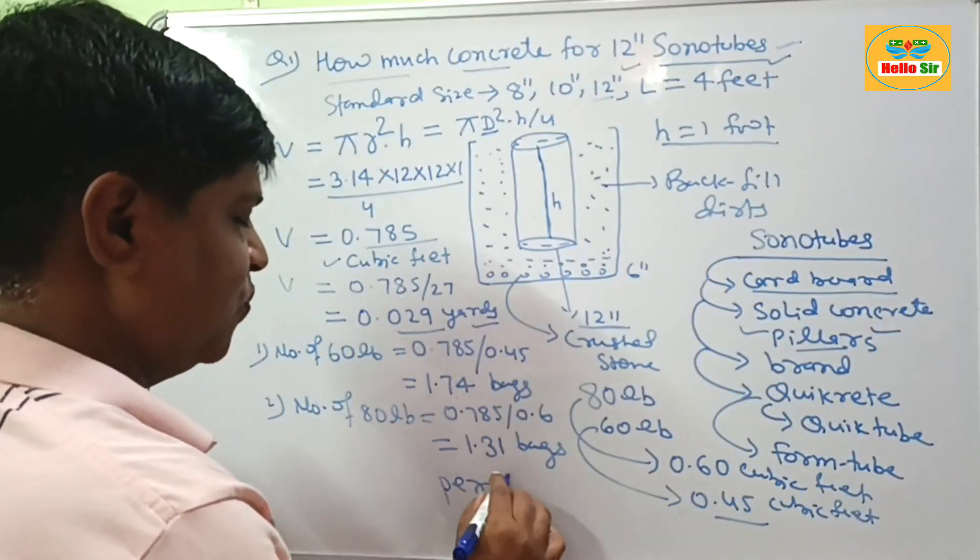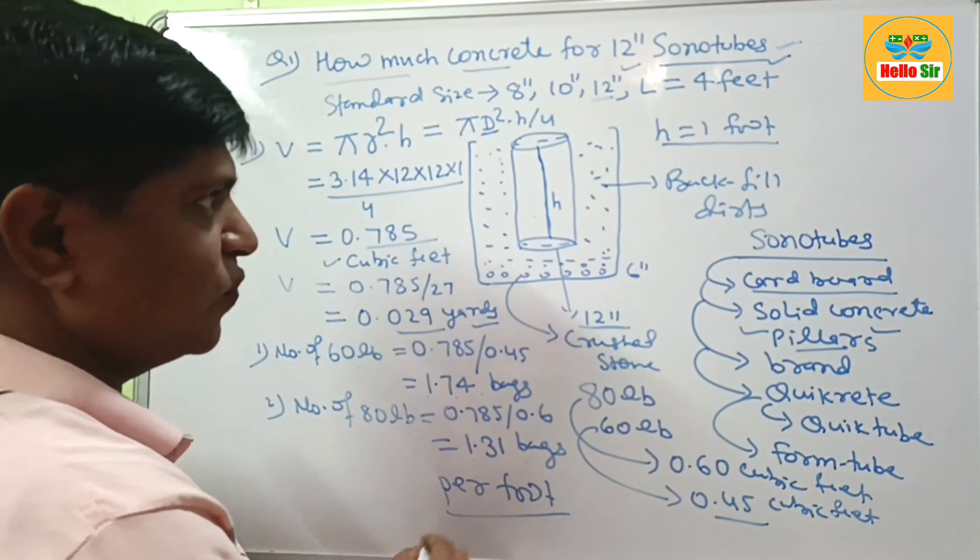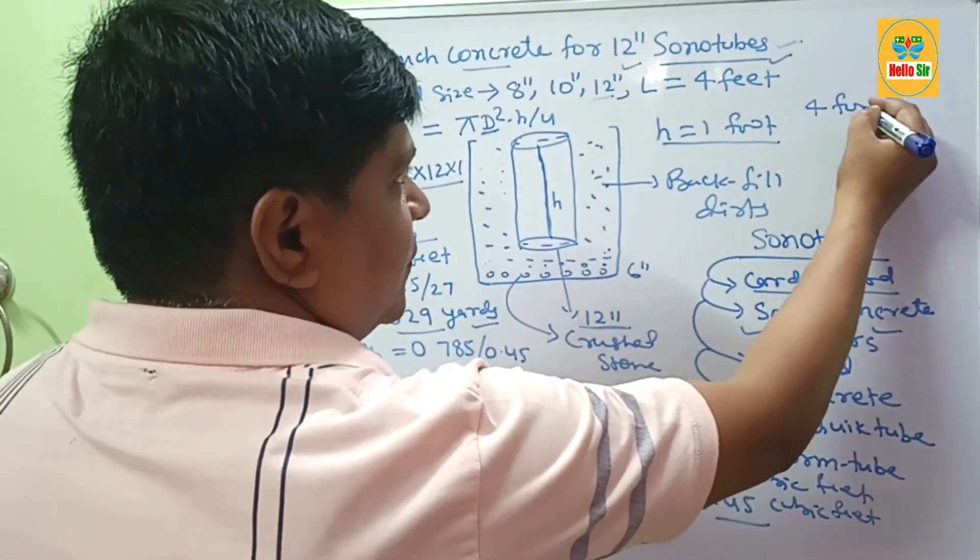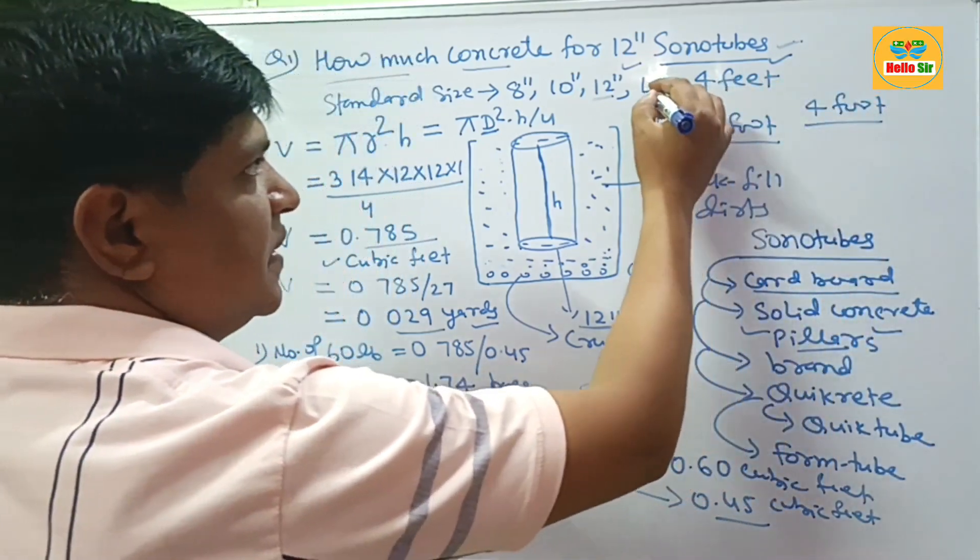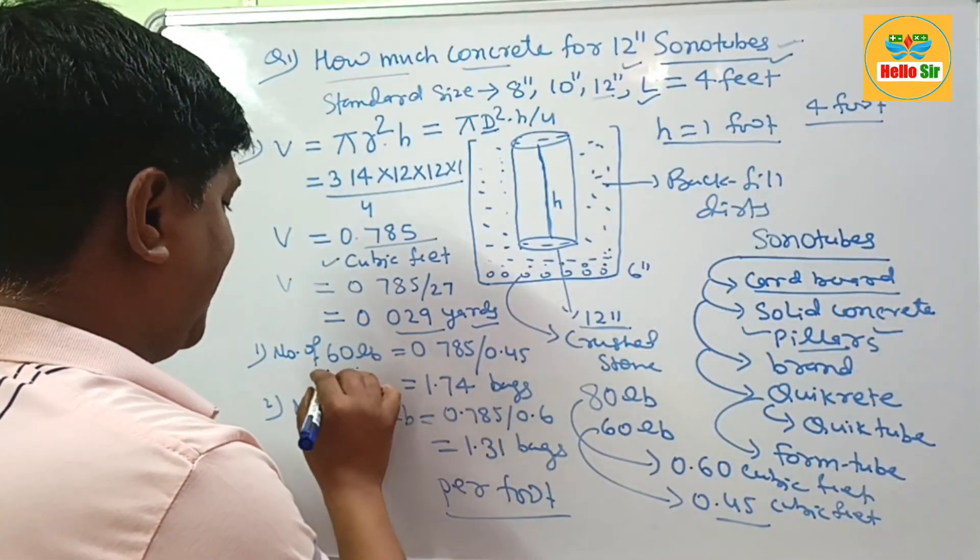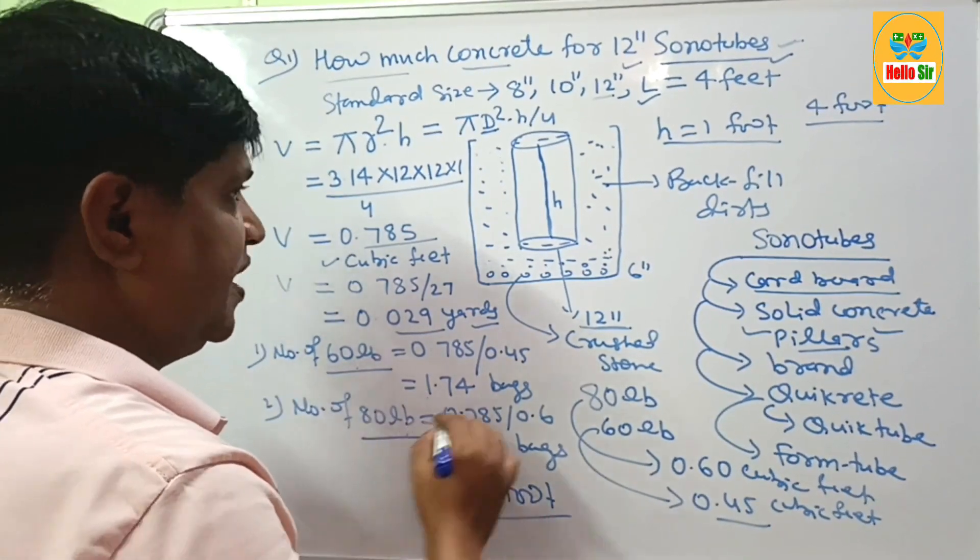How much length? Per foot. And if you want to calculate 4-foot length, because the standard length of sonotubes is about 4 feet.